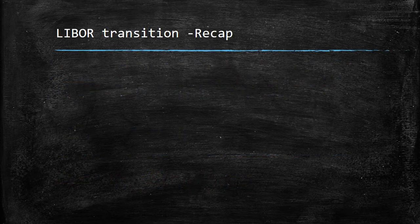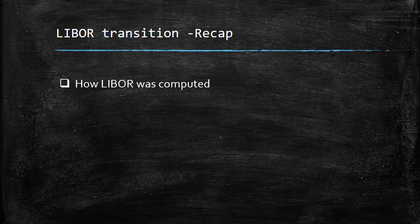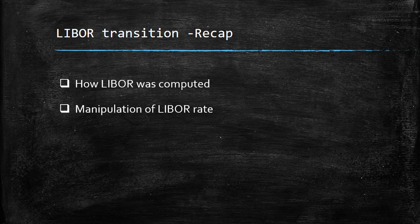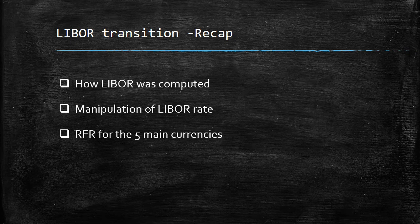Before we go into new concepts of RFR, let's do a quick recap. We have seen how LIBOR was computed — it was based on rate quotations given by various banks for their interbank transactions, so there were actually no underlying transactions themselves. Hence, it was easily manipulated and we had several scandals and fiascos related to LIBOR. That's why authorities thought it was time for a change and introduced the concept of RFR — risk-free rates for all the main five currencies. Starting from USD, we have SOFR; for GBP, we have SONIA, and so on.